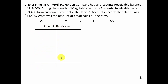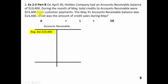It says on April 30th, Holding Company had an accounts receivable balance of nineteen thousand four hundred dollars — that's a beginning balance. April 30th is the end of the month, so that's the same as May 1st, meaning we're analyzing this account for the whole month of May. During May, total credits to accounts receivable were fifty-three thousand four hundred dollars.